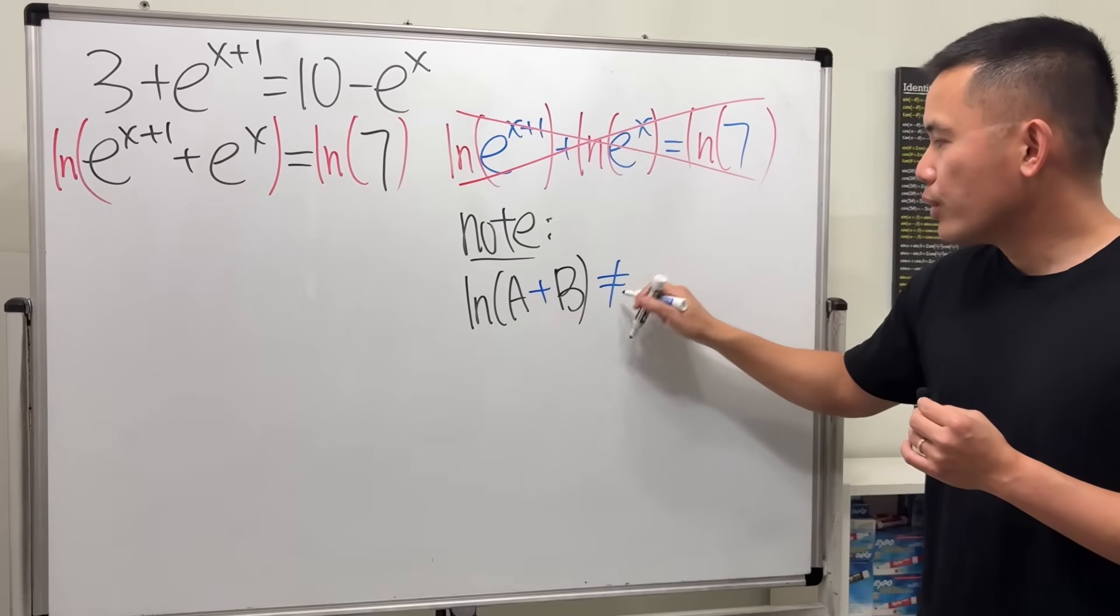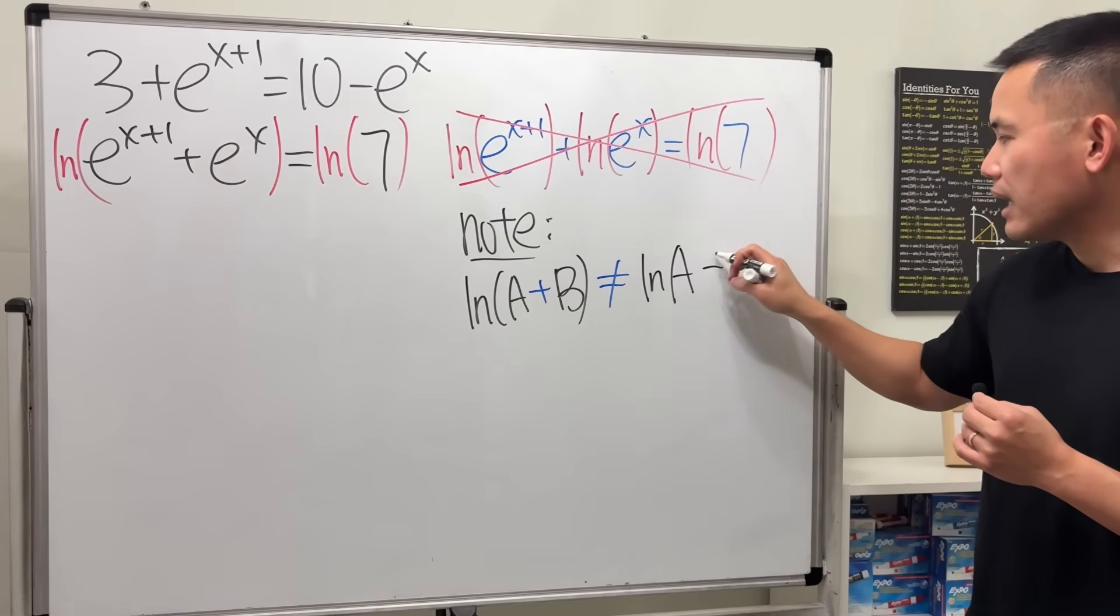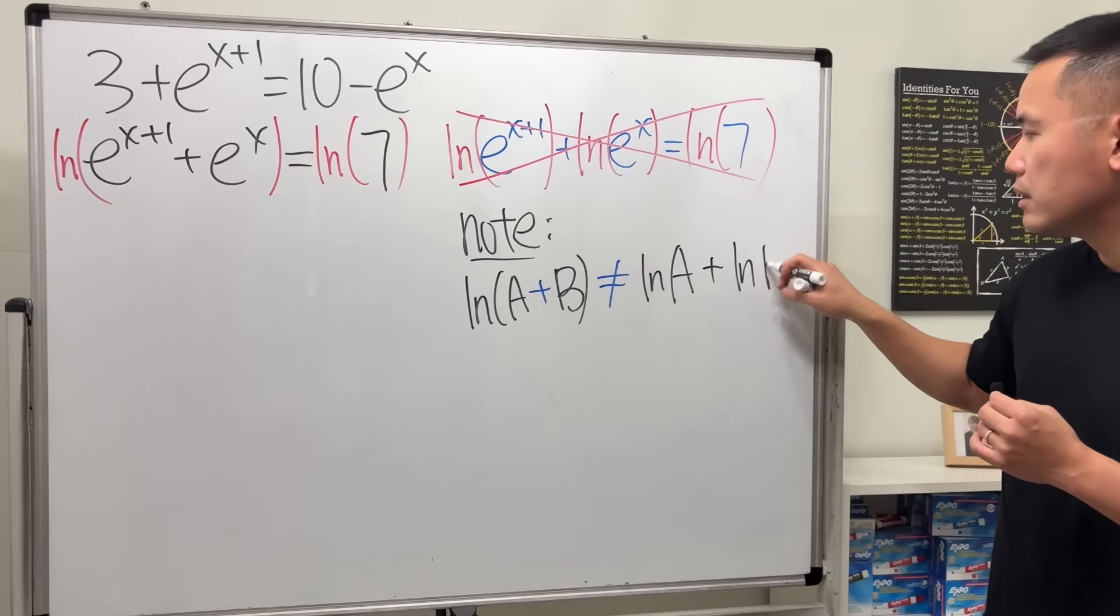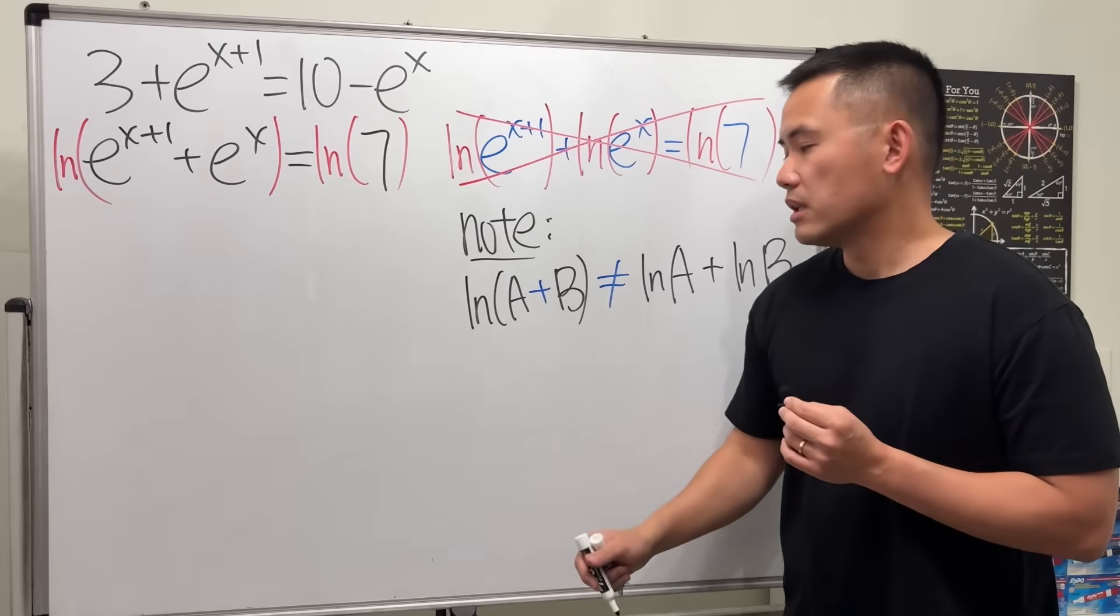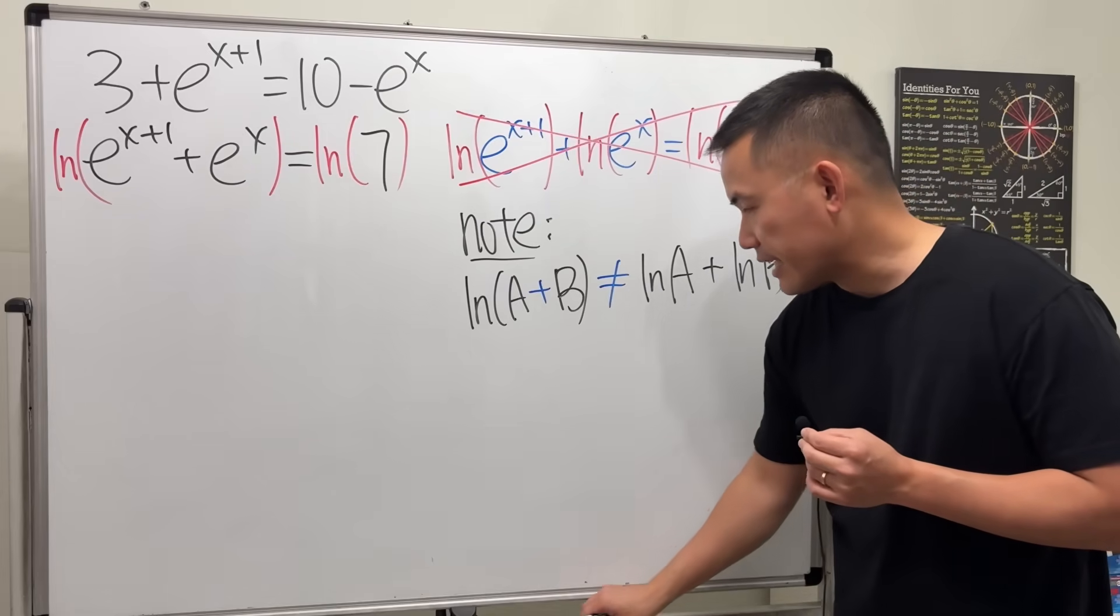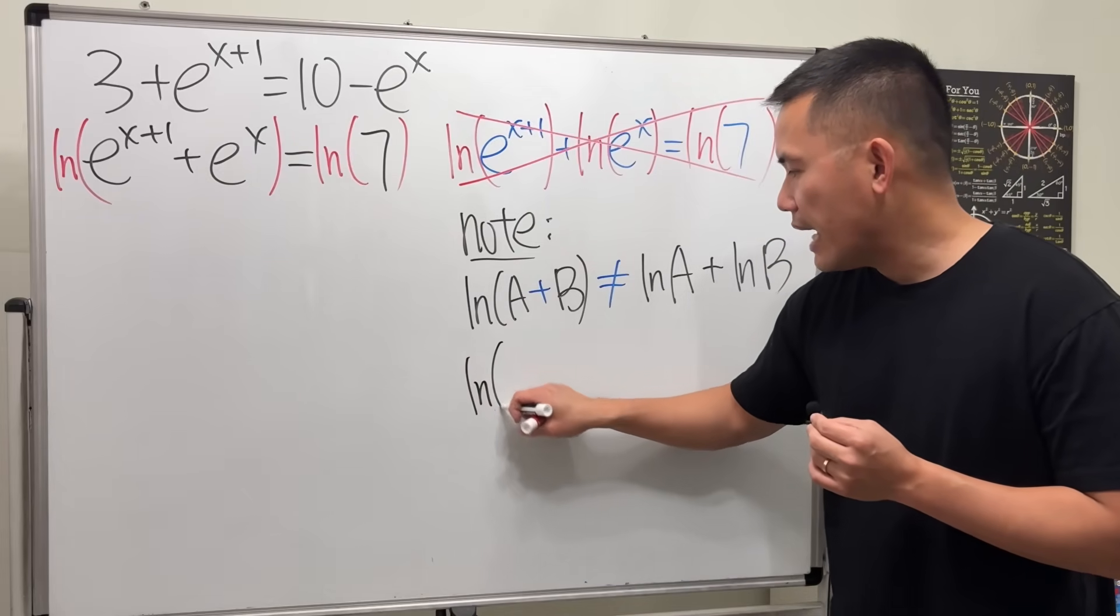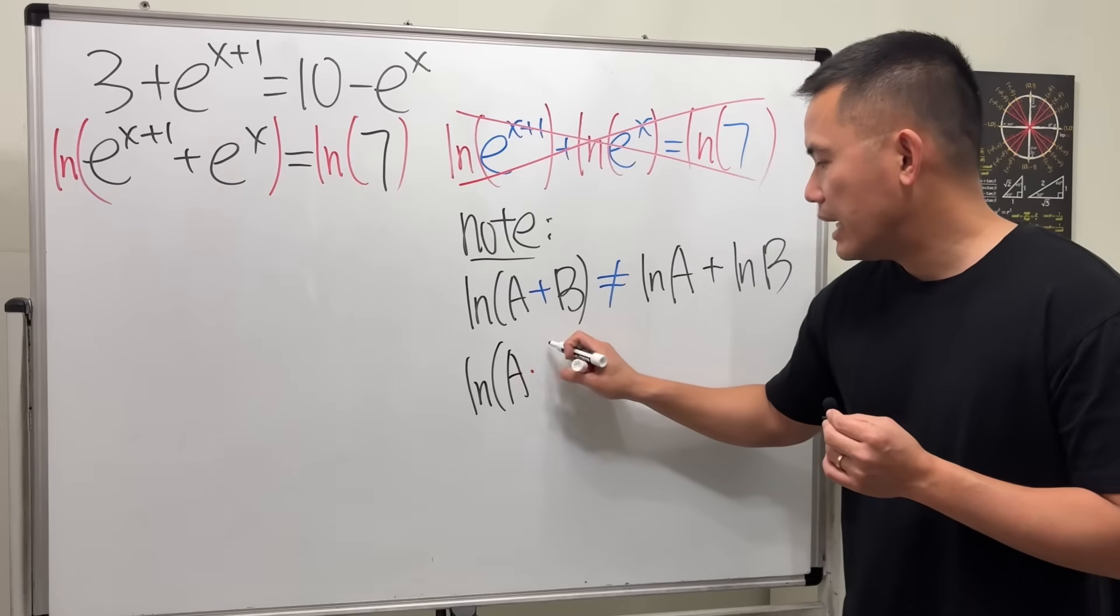When we have ln(a + b), this right here is not equal to ln(a) + ln(b). They are not the same thing. Well, when can we really break it apart? That's when we have a multiplication inside.